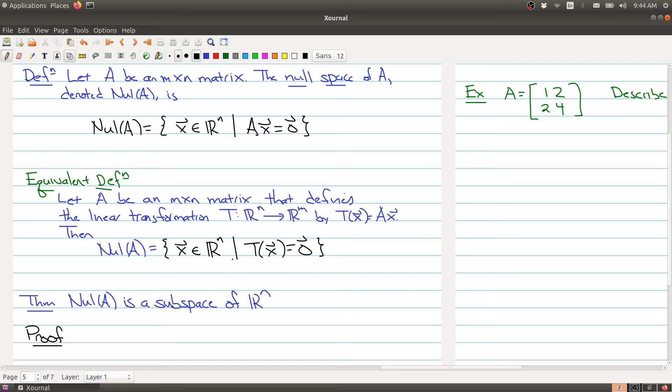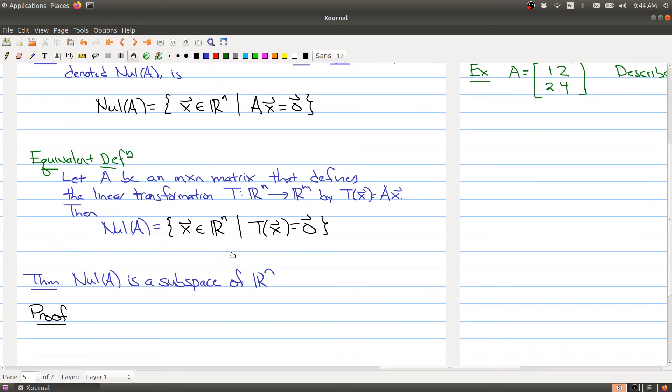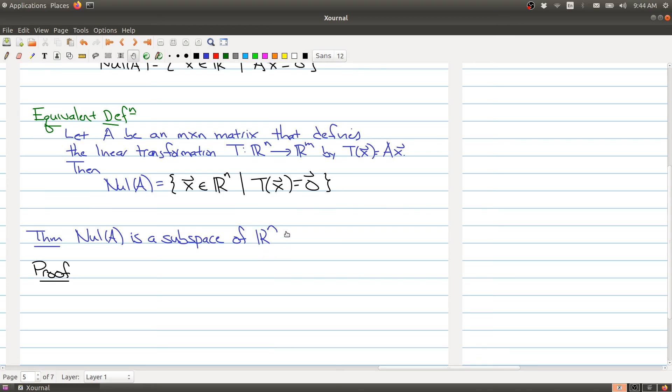Now, Null(A) is going to be a subset, a collection of objects inside of R^n. But it turns out that the null space actually has more structure. R^n is a vector space, and Null(A) actually is a subspace. So it has the structure of a vector space itself. The proof is very straightforward based upon everything we've learned so far.